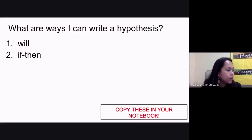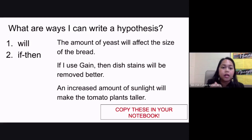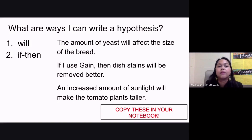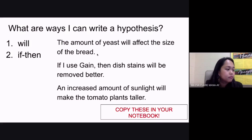If you have no questions, I'll move on. In the examples of our scientific question from a while ago, these are the possible hypotheses that we can have. You can say, 'The amount of yeast will affect the size of the bread,' or you can say, 'If I increase the amount of yeast, then the size of the bread will also be increased.' That is in your if-then format.